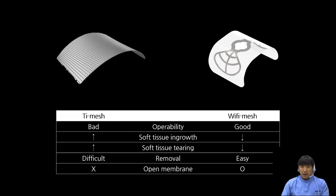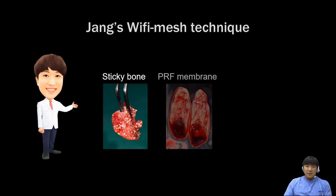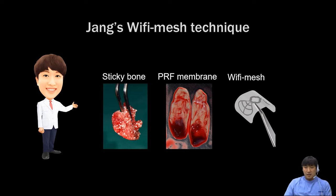Wi-Fi mesh is very workable. Cutting, bending, and application — everything is easy. You don't have to worry about soft tissue ingrowth or soft tissue tear. It has a very smooth surface, so its removal is very easy. Even Wi-Fi mesh can be used for open membrane technique. These are the main graft materials in my implant surgery. When I perform three-dimensional ridge augmentation, especially in one-wall or two-wall defects, sticky bone, PRF, and Wi-Fi mesh are used together for bone graft.